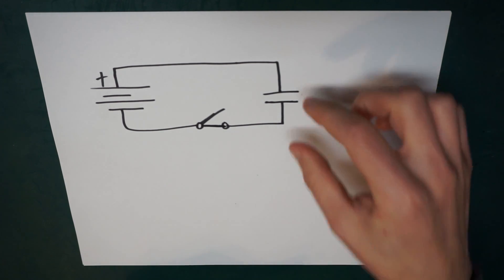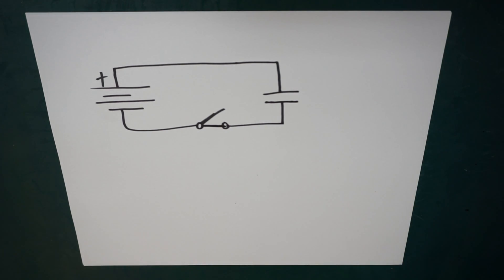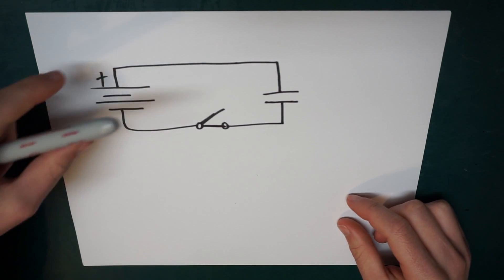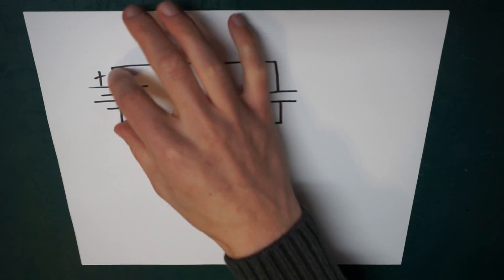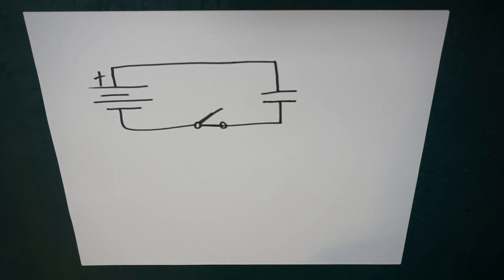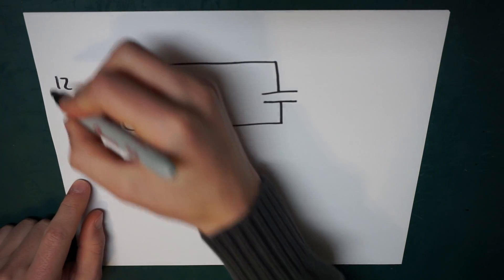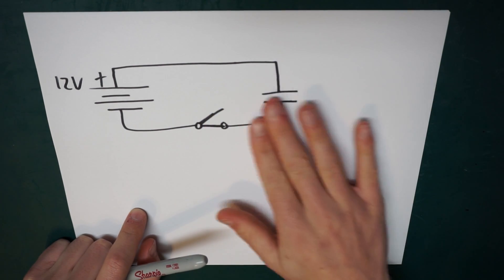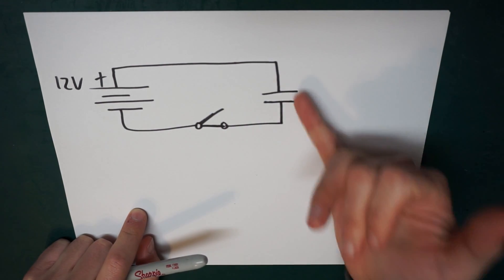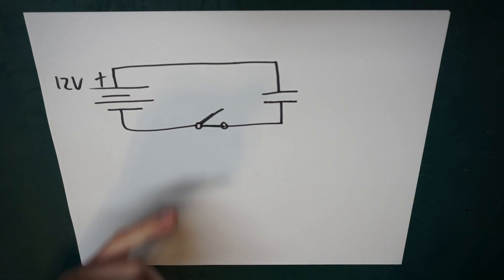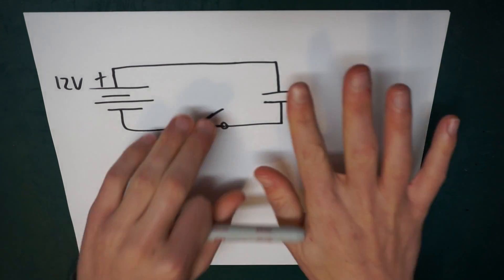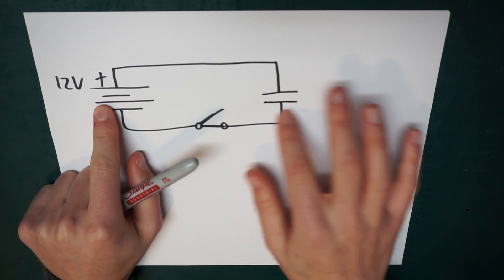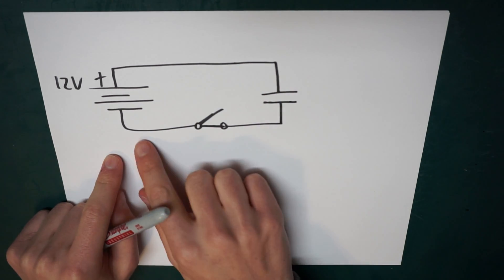So as soon as we close this switch, what's going to happen to this capacitor? If the capacitor is discharged and this battery is at some potential difference — let's say 12 volts — then over here this capacitor was at 0 volts because it was discharged; it has a potential difference of 0 volts across it. The instant we close this switch, this capacitor is going to want to get to the same potential difference — it's going to want to have the same voltage across it as its power supply. So current will begin to flow.